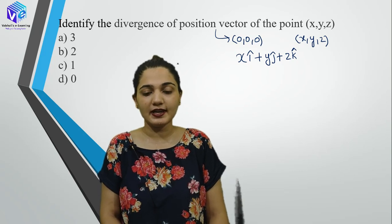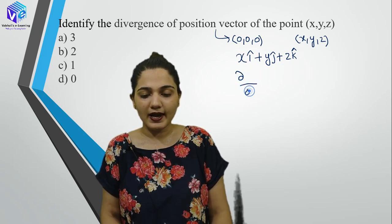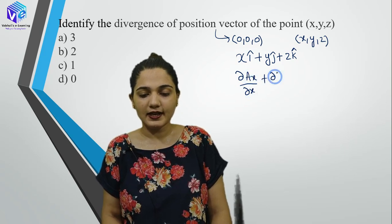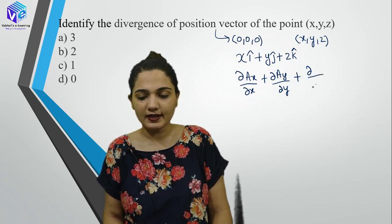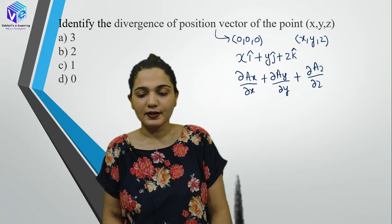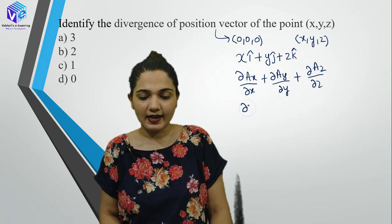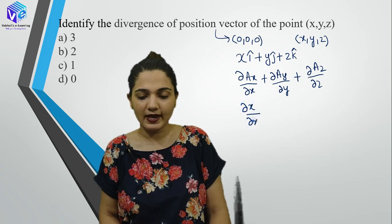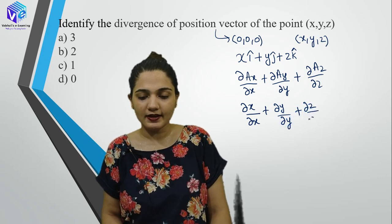So divergence = del(x)/del(x) + del(y)/del(y) + del(z)/del(z) = 1 + 1 + 1 = 3. The divergence of the position vector is 3.